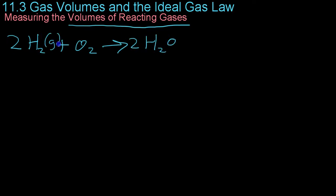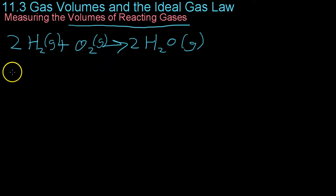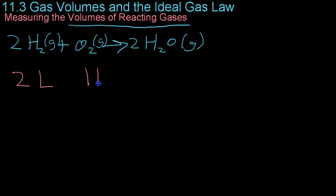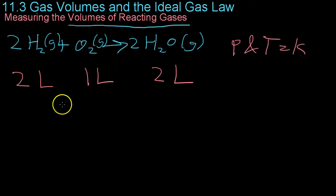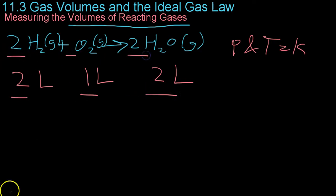We'll say these are all gaseous. When scientists started doing experiments in the early 1800s reacting various gases, they found that gases reacted in definite proportions of volume. For example, if you had 2 liters of hydrogen, you could react it with 1 liter of oxygen to yield exactly 2 liters of water. As long as you kept the pressure and temperature constant, you would always get these whole number ratios that corresponded to the chemical equation coefficients.